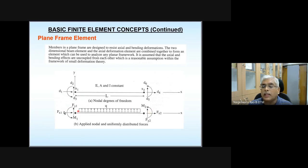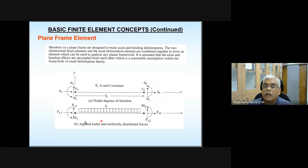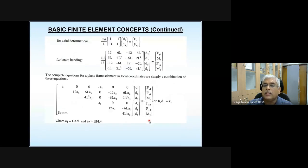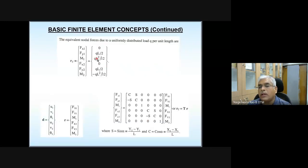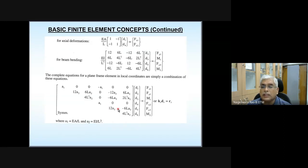Whatever load vector you have seen for beams is arranged in this manner for the frame element, with appropriate contributions going into the appropriate locations. The local displacement vector and local force vector are noted. Global displacement components u1, v1, θ1, u2, v2, θ2 form the global displacement vector D, while R is the force vector in the global coordinate system.